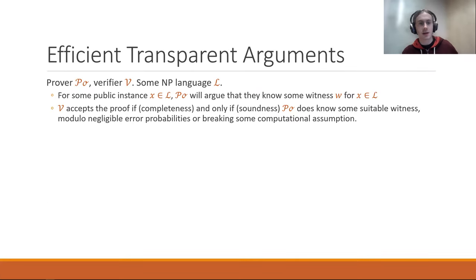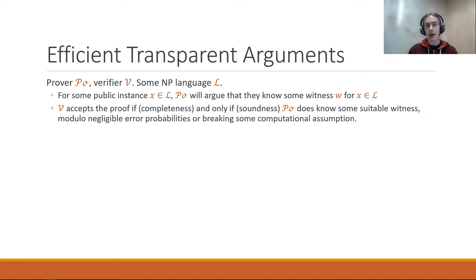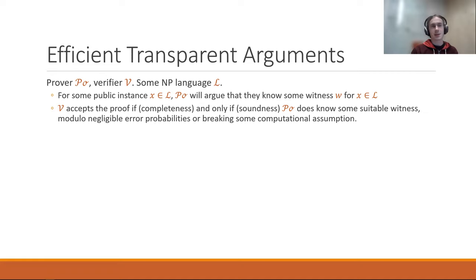So what's an efficient transparent argument? An argument is a protocol between prover P and verifier V, for some NP language L. The prover has some public instance X in L, and the prover has some witness W for that instance. The prover wants to show the verifier that they know that witness, possibly without revealing anything about it. The verifier ultimately accepts the proof if and only if the prover does have such a witness, modulo some negligible error probabilities or the proof requiring breaking some computational assumption.